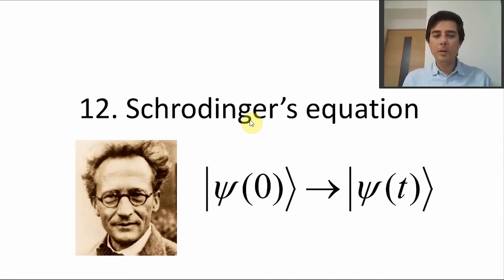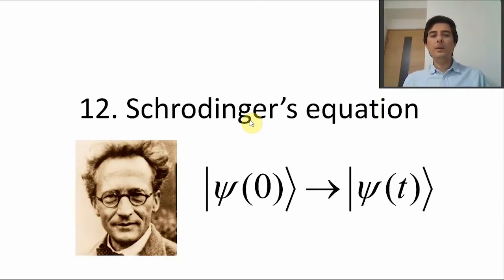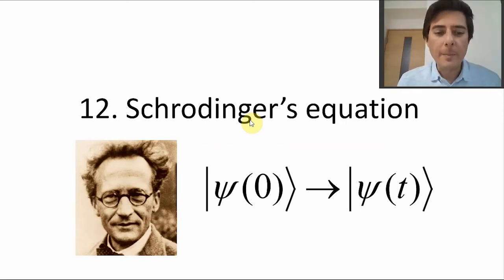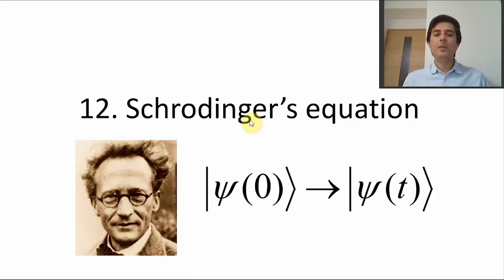Hi, and welcome to Lecture 12 in my series on Introduction to Quantum Theory and Technologies. This week we are going to talk about Schrödinger's equation, which is one of the central equations in quantum mechanics, and no course in quantum theory would be complete without it. This will eventually lead us to quantum gates and quantum computers. This is probably the final lecture covering the foundations of quantum theory, and from next lecture we'll move on to quantum information and computing.